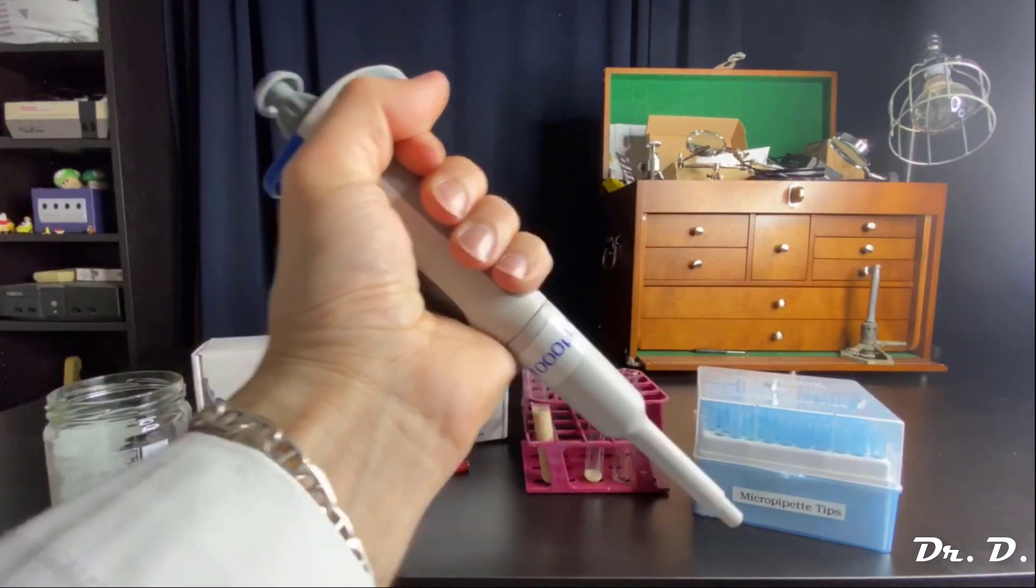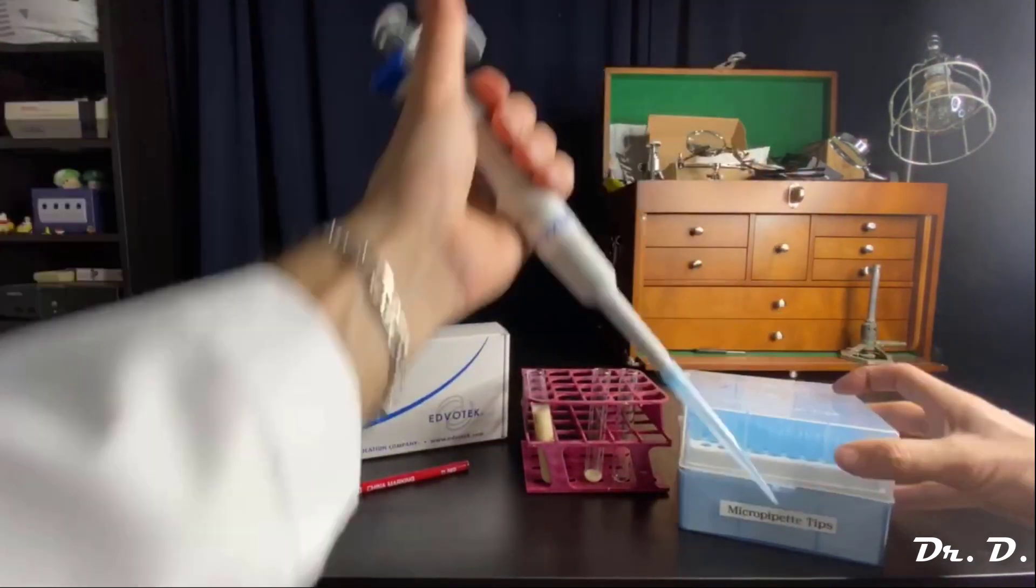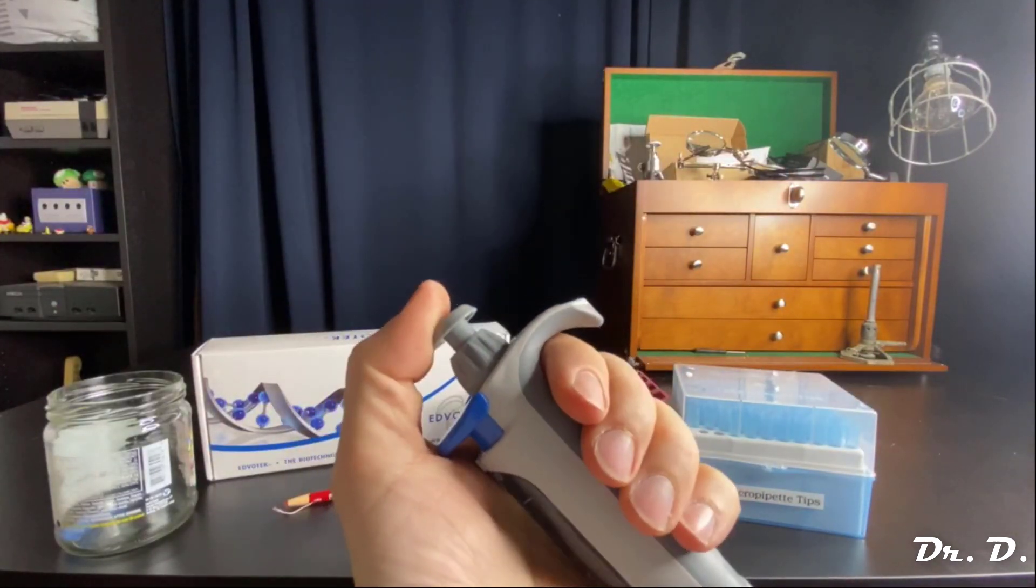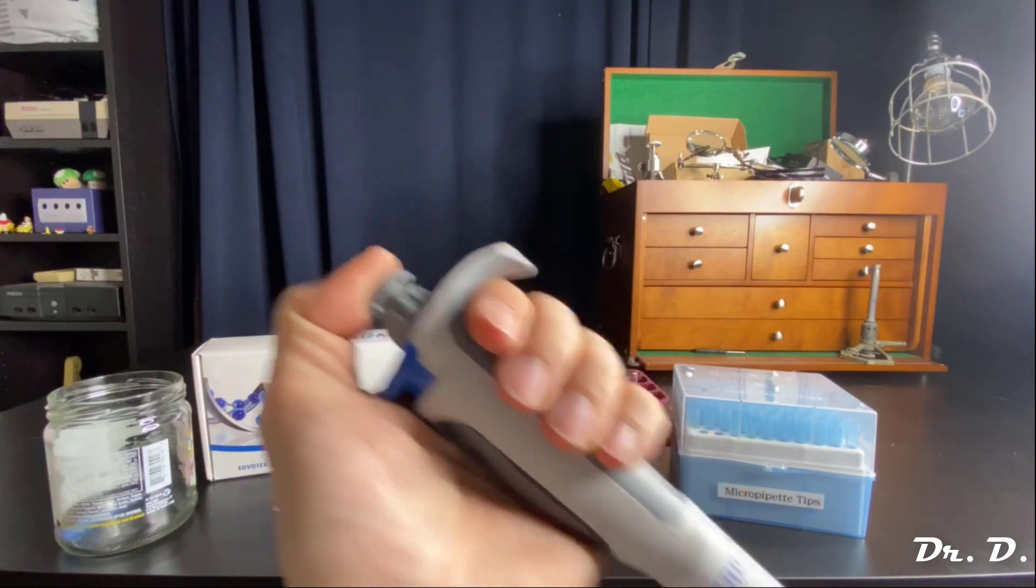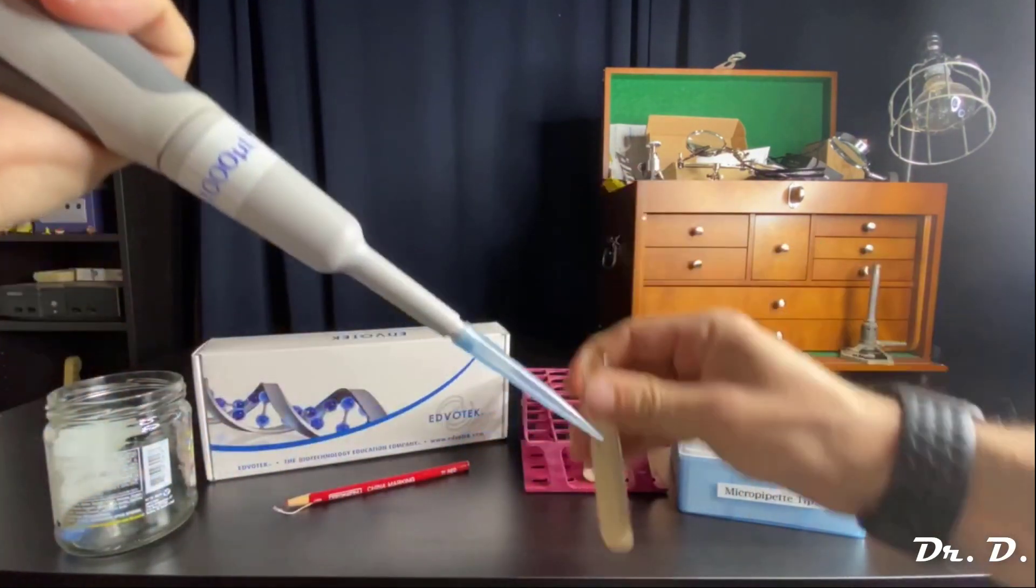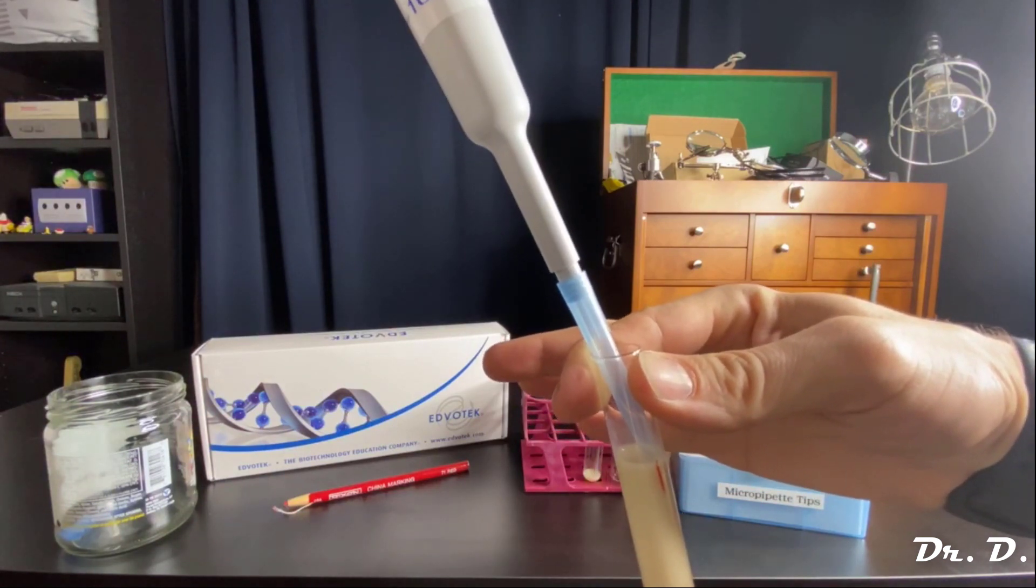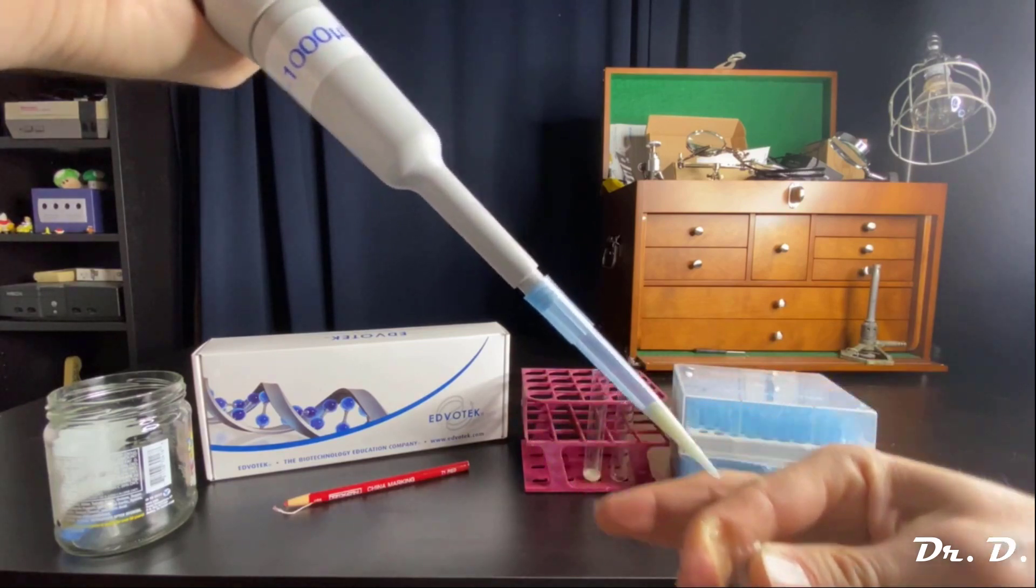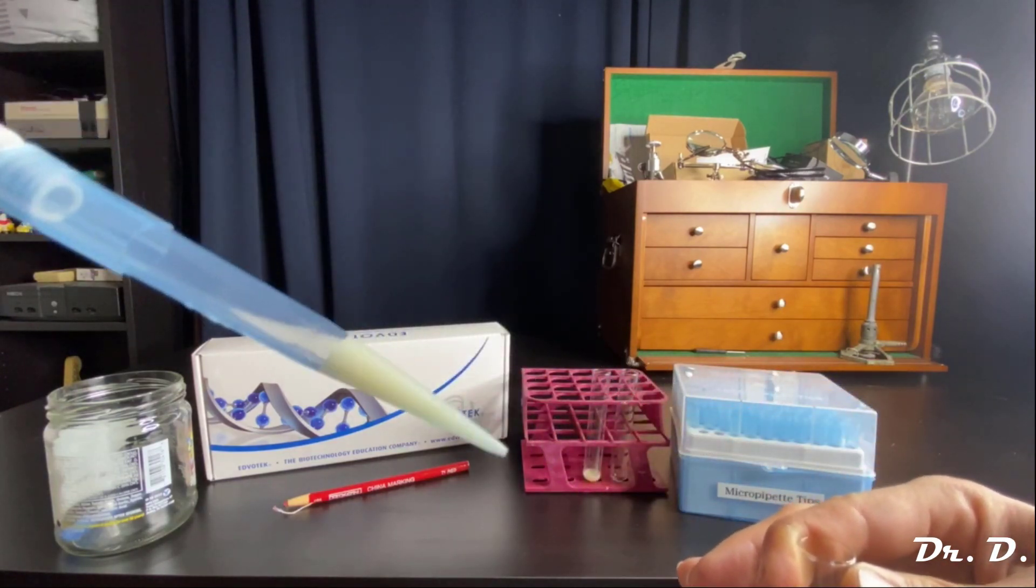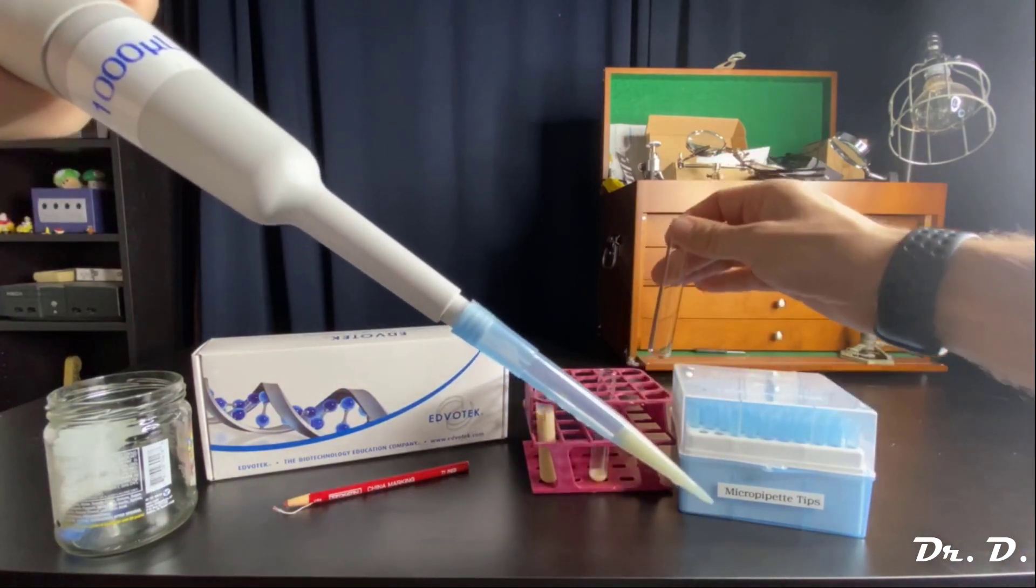Remember, at this point, I grab a tip. Got my tip. Remember, at this point, I pushed down to the first stop, not the second stop, the first stop, grab my tube, go into the solution, slowly let up on the plunger. And there you go. You can clearly see the solution in the tip. And now I'm going to aliquot that into tube three.